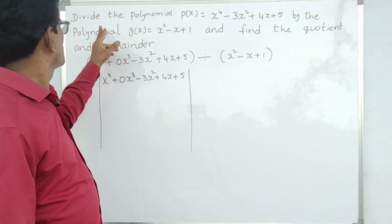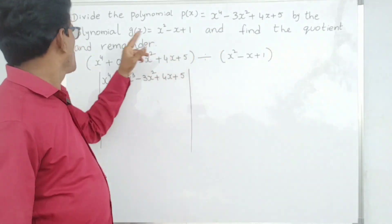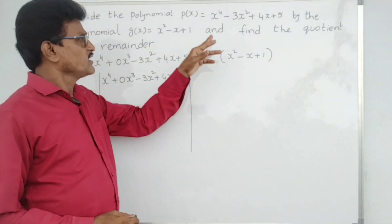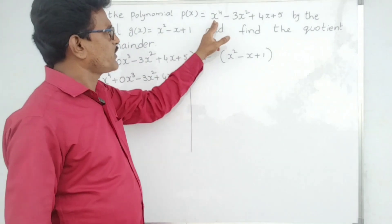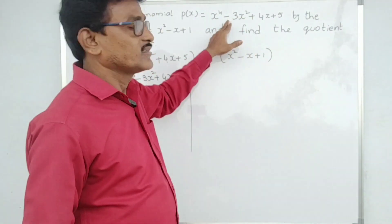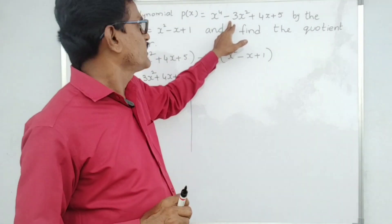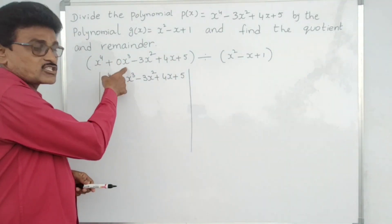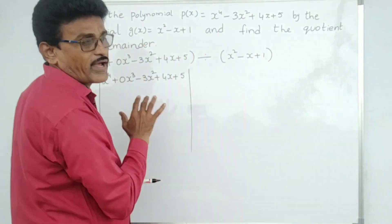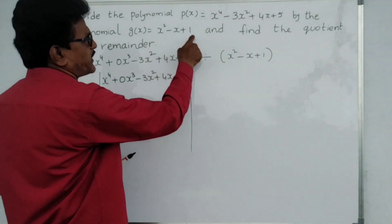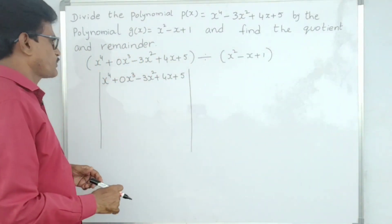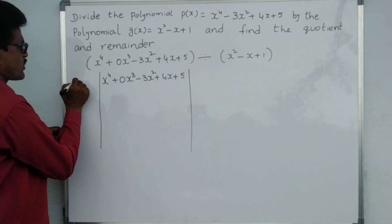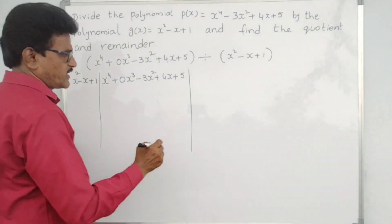In the next problem: divide the polynomial p(x), a fourth-degree polynomial, by g(x), a second-degree polynomial, and find the quotient and remainder. Observe that in this fourth-degree polynomial, the x³ term is missing. So write it as x⁴ plus 0·x³ minus 3x² plus 4x plus 5. Divide this by x² minus x plus 1.